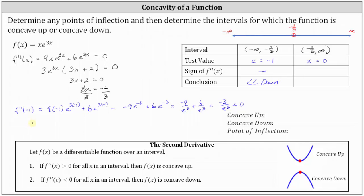Now we determine the sign of the second derivative at x equals 0. F double prime of 0 is equal to 9 times 0 times e to the power of 3 times 0, plus 6 times e to the power of 3 times 0. The first product is 0 and e to the 0 is 1, so f double prime of 0 equals 6, which is greater than zero or positive. Because the second derivative is positive over this subinterval, the function is concave up over the open interval from negative 2/3 to infinity.